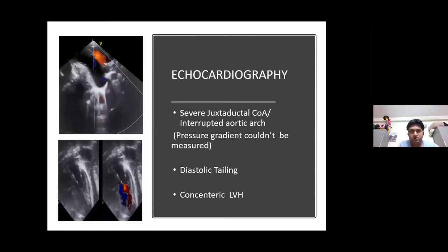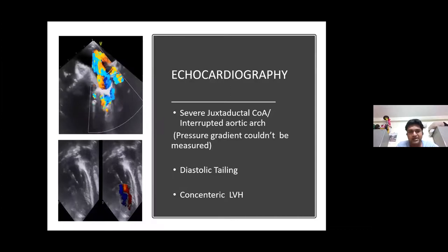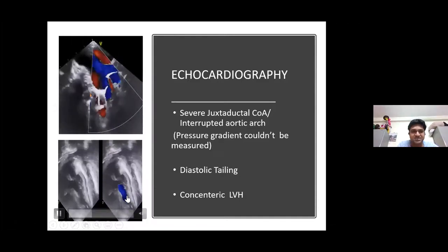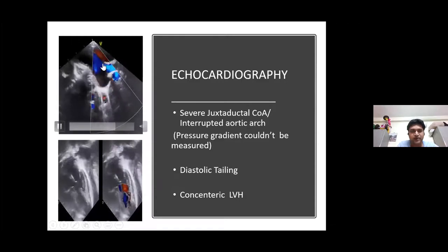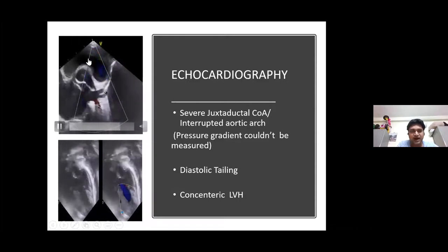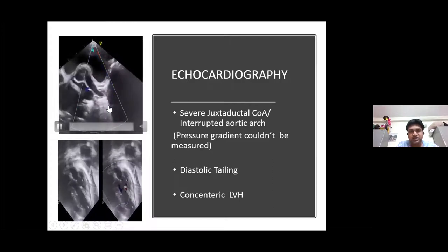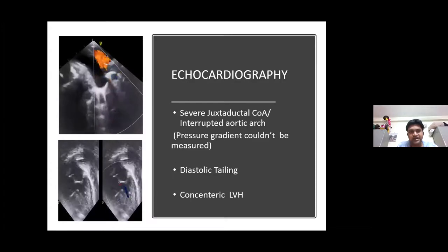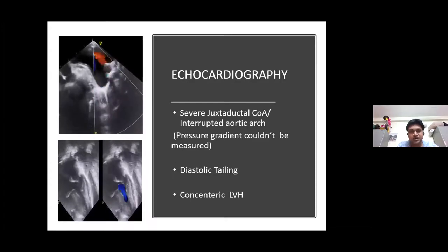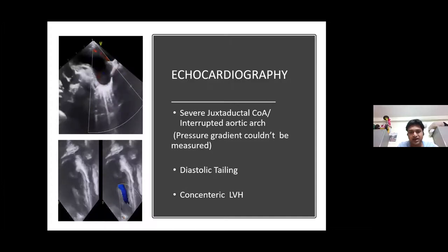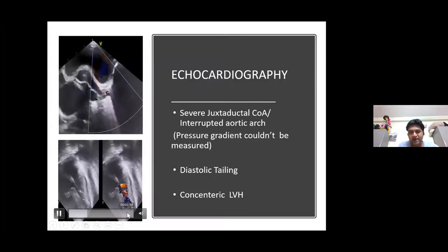Moving on to the cardiac part — otherwise the heart was normal, but there was ventricular hypertrophy. As you can see here, there is gross ventricular hypertrophy, but there is no LVOT obstruction. In the suprasternal view, you can see the proximal part of the arch is well seen, but we cannot see the continuation of the arch. So there was severe juxtaductal coarctation of the aorta, or there may be an interrupted aortic arch. We could not measure the pressure gradient, but there was diastolic tailing in the descending aorta and concentric left ventricular hypertrophy.